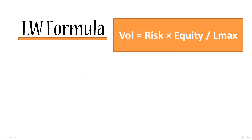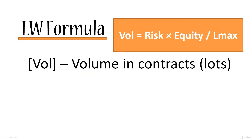I'll put the formula up at the top and now let's go into the elements from left to right. Volume is the volume of your transaction in contracts or lots depending on the market that you're trading. On the forex market it would be lots, on the futures market it would be contracts. The output of this formula is the volume that you need to enter into your transaction.